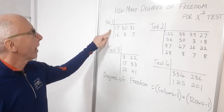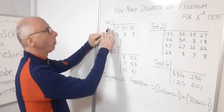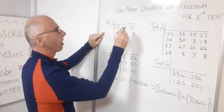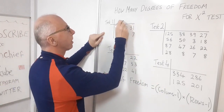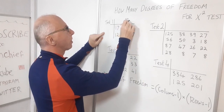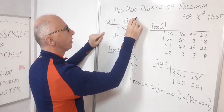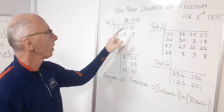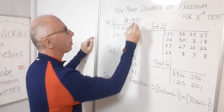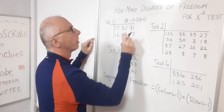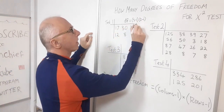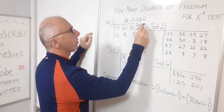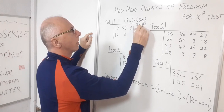Let's work it out for test one. We've got three columns, so degrees of freedom equals three minus one for the columns, multiplied by the rows minus one — there are two rows, so subtract one. That gives us two times one, so the degrees of freedom for test one is two.